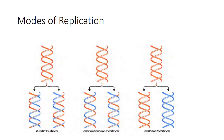The process of replication was initially explained by three different theories: the dispersive method, the semi-conservative method, and the conservative method. In replication, we use two terms: the parental DNA strand and the daughter DNA strand. The DNA which is making a copy of itself is called the parental strand, and the new DNA which is synthesized — the exact copy of the parent — is called the daughter strand.